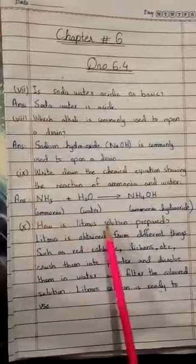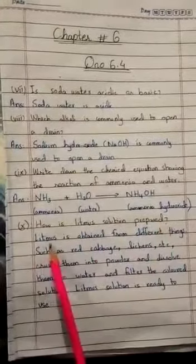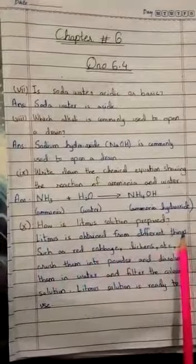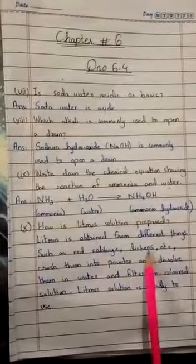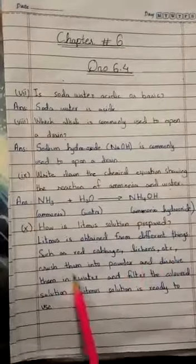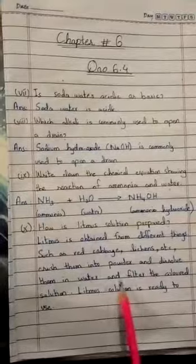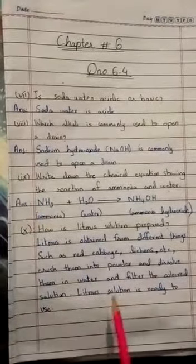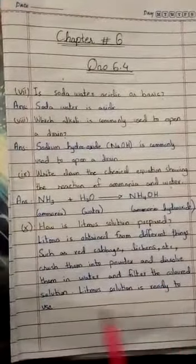The last part is: How is litmus solution prepared? The answer is litmus is obtained from different things such as red cabbage, lichens, etc. Crush them into powder, dissolve them in water, and filter the colored solution. Litmus solution is ready to use.